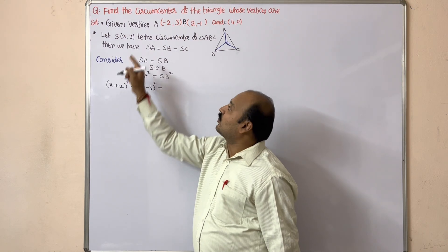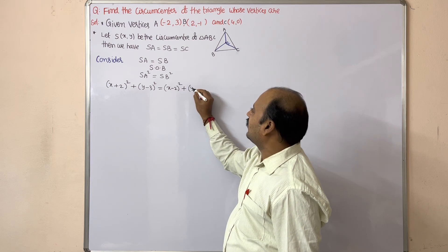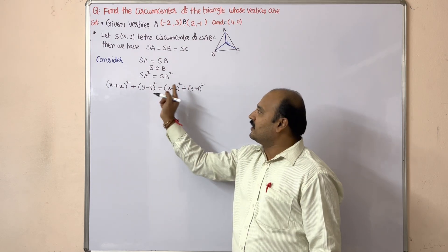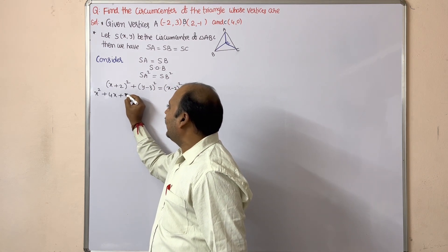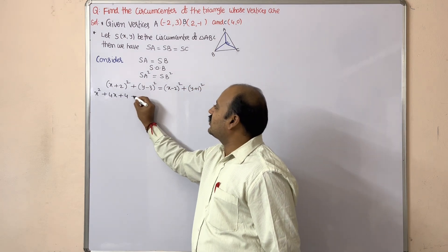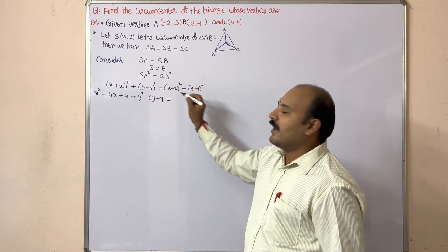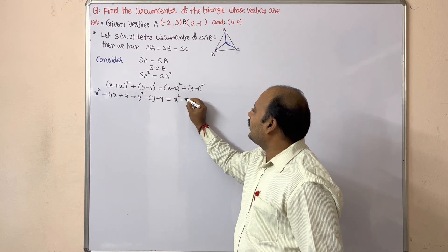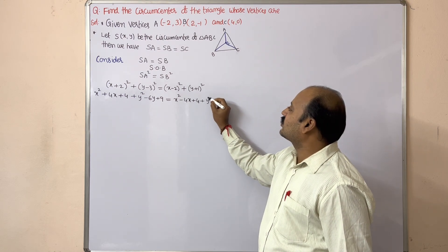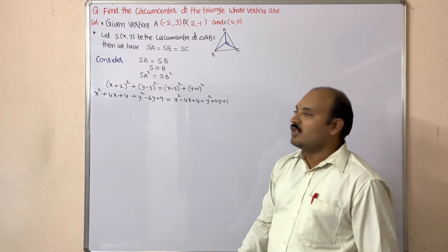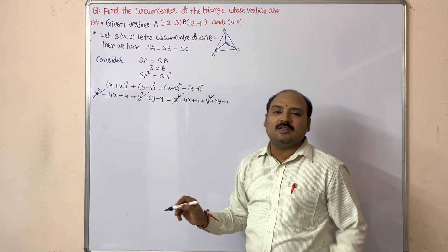equals SB²: (x − 2)² + (y + 1)². Now simplifying: x² + 4x + 4 + y² − 6y + 9 equals x² − 4x + 4 + y² + 2y + 1. The common terms x² and y² cancel from both sides, and the 4s also cancel.